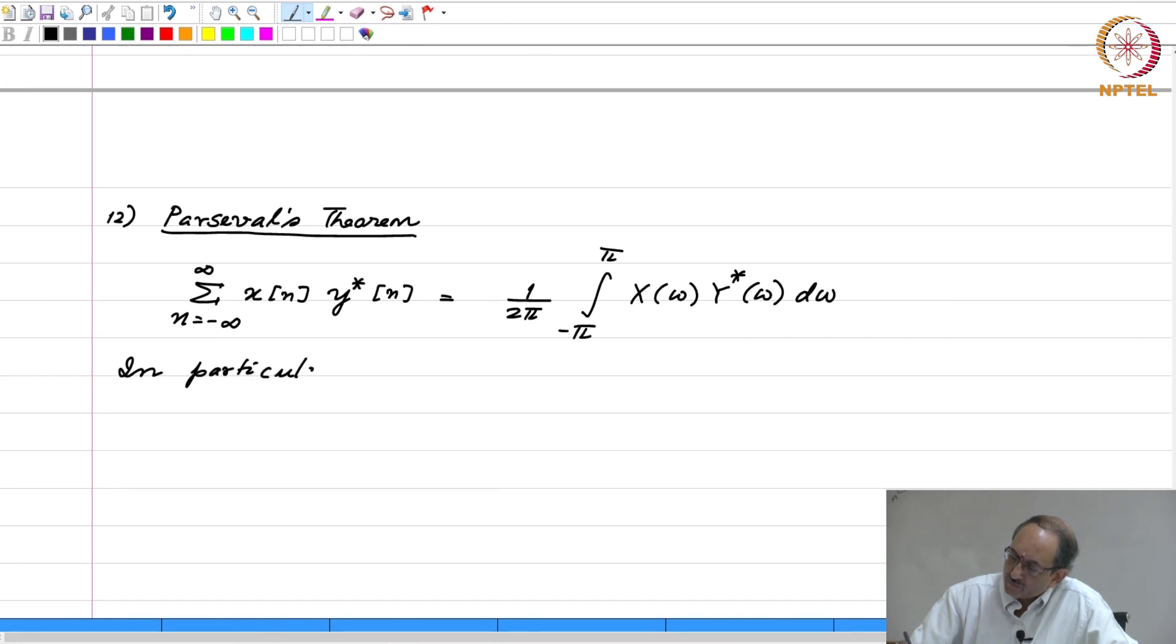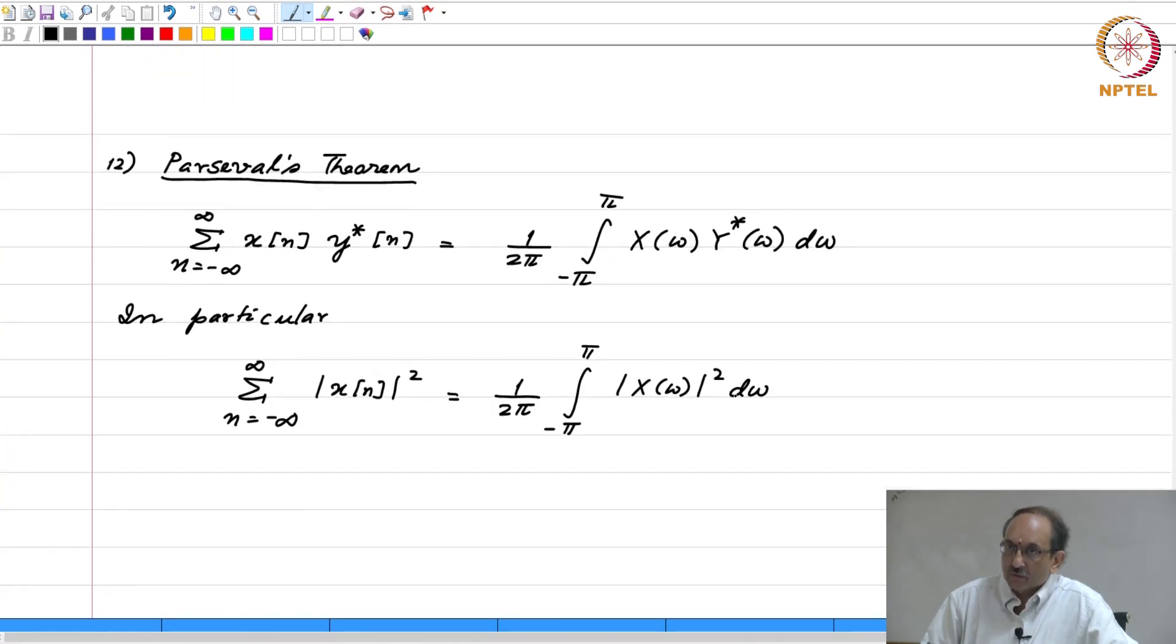And there is a special case of this general result. If y happens to be the same as x, then this becomes x of n times x star of n, which is nothing but the magnitude squared. On this side, you can make the same change and you get this result.